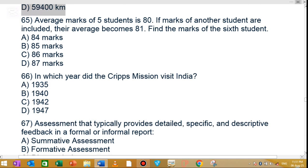MCQ number 65 or 67: Average marks of 5 students is 80. If marks of another student are included, their average becomes 82. Find the marks of the 6th student. The correct answer is 92. Option C is the correct answer.